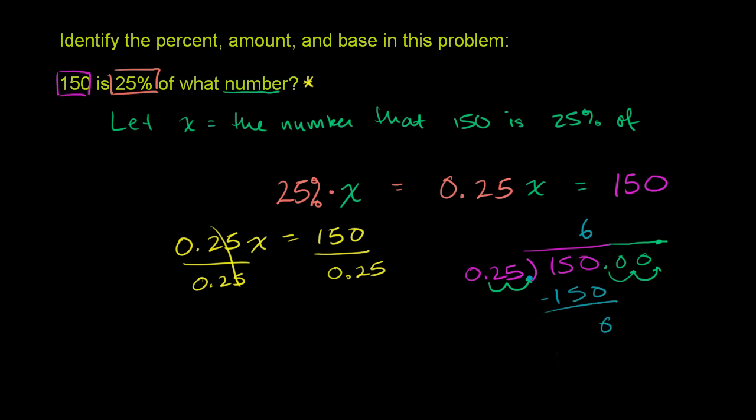You subtract, you get no remainder. Bring down this 0 right here. 25 goes into 0, 0 times. 0 times 25 is 0. Subtract, no remainder. Bring down this last 0. 25 goes into 0, 0 times. 0 times 25 is 0. Subtract, no remainder.